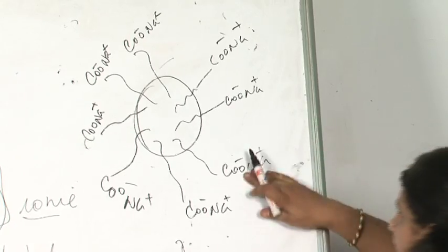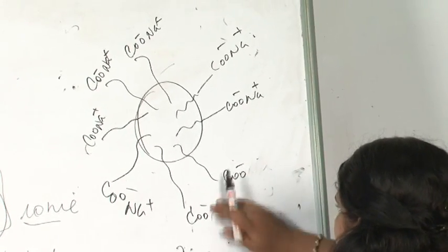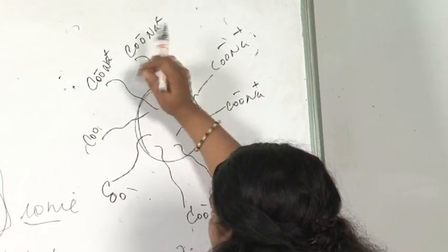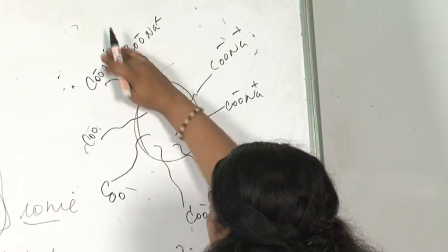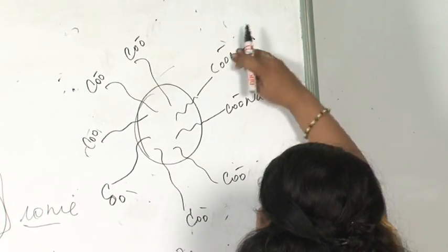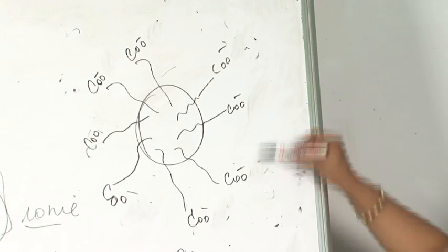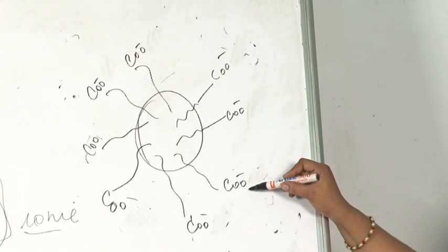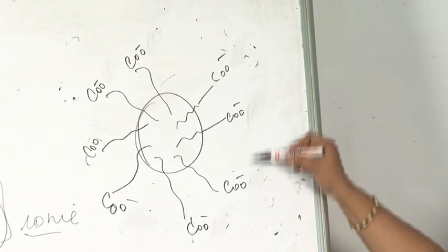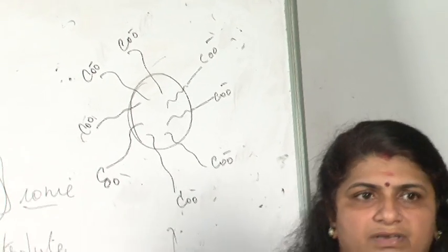If I remove the Na⁺, I can write it as COO⁻ because it is an ionic entity. This is COO⁻. So these negative ends will never combine together — they repel each other, and the micelle will never combine or settle down.